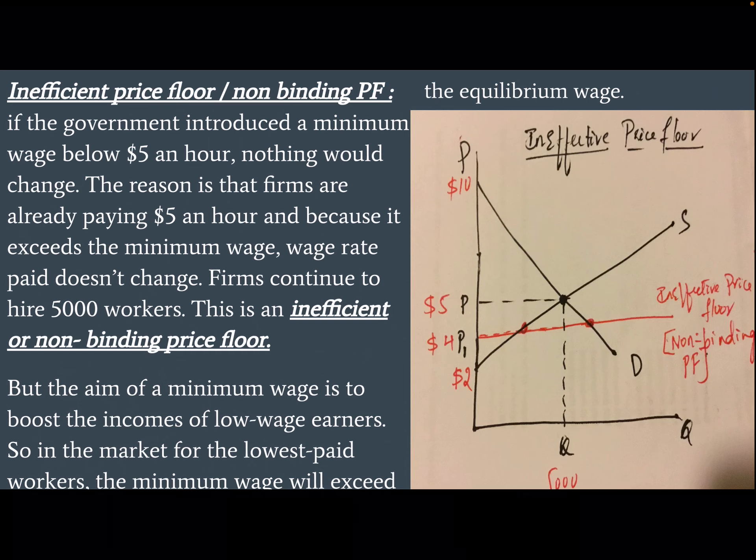If the government introduced a minimum wage below $5 an hour, nothing would change. The reason is that firms are already paying $5 an hour, and because it exceeds the minimum wage, the wage rate paid doesn't change. Firms continue to hire 5,000 workers. This is an inefficient or non-binding price floor.